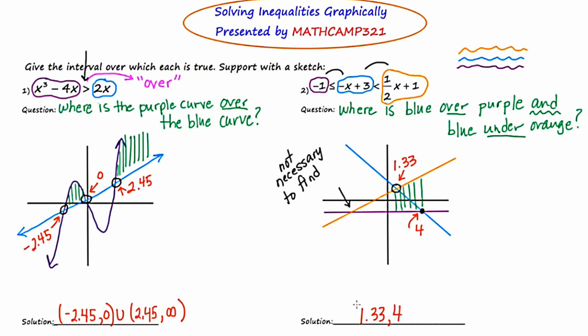The winning region is between 1.33 and 4. 1.33 gets a parenthesis and 4 gets a bracket. With these two examples, I've outlined a process by which we can solve any algebraic inequality without using algebra — we can simply use the graphing calculator. Make sure you know this procedure inside and out because in the next day or two you're going to have a lab where you'll have to do this for a grade.